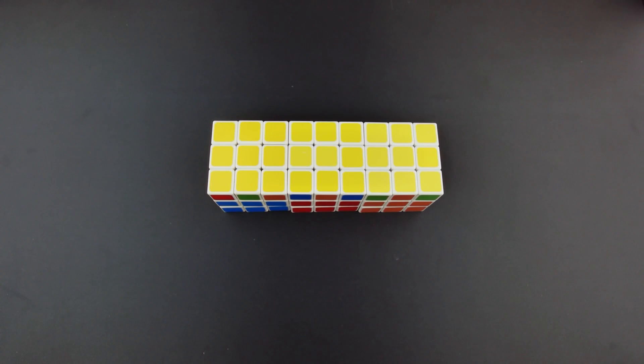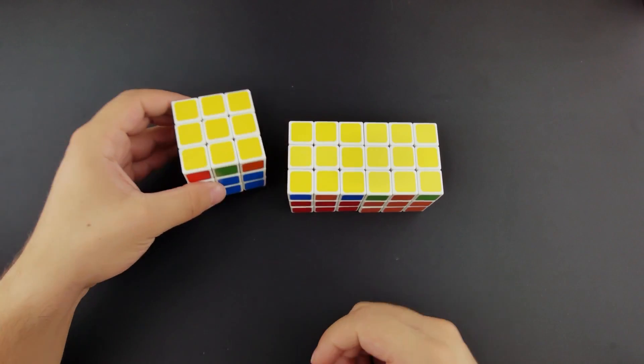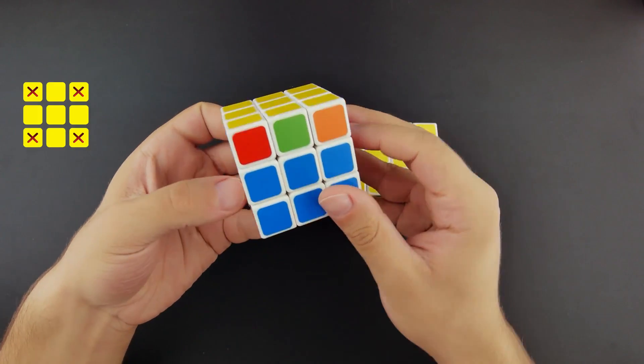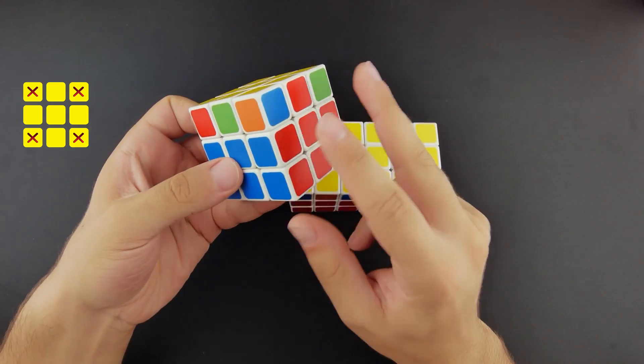The yellow corners on your cube will resemble one of the following cases. Case 1: none of the yellow corners match each other, which means that you should swap two of them diagonally.